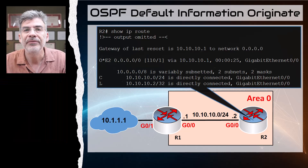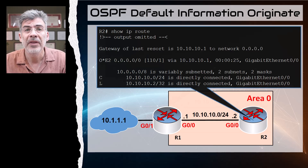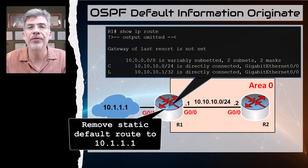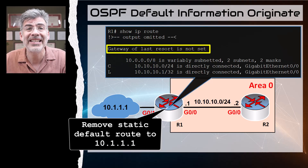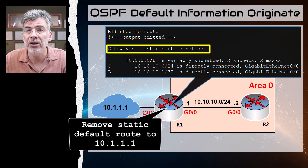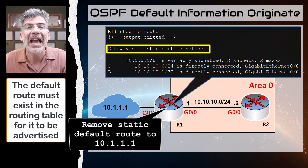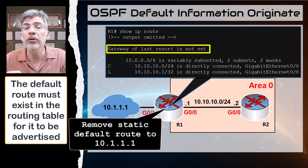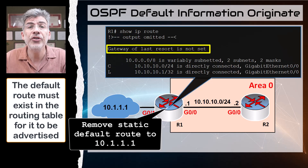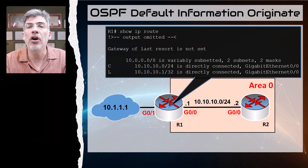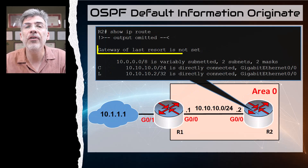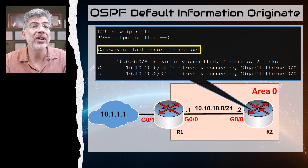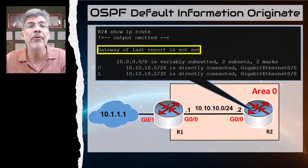There are a couple of things to keep in mind with this feature. If we remove the default route from the routing table by removing the configured static route, then even with the default-information originate command configured, OSPF does not advertise a default route — since there's no default route in the routing table, there's nothing to advertise. If you look at R2, you'll see that the default route has been removed.